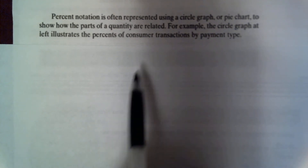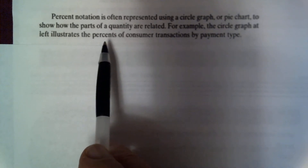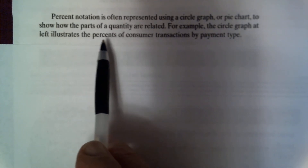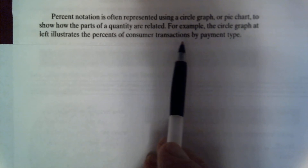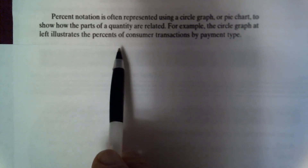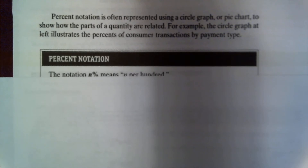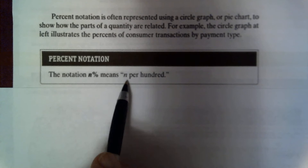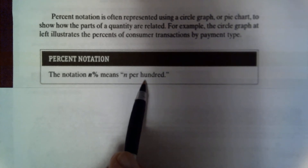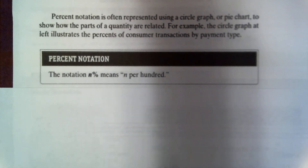Percent notation is often represented using a circle graph or pie chart to show how parts of a quantity relate to the whole. Here is the key definition: percent notation means n percent equals n per hundred. The percent symbol means 'per hundred.'